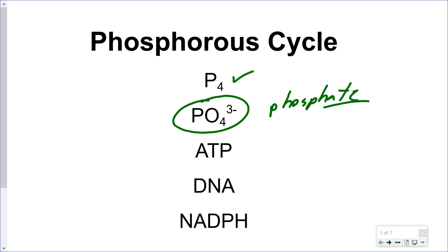When phosphate is taken up and used by biological organisms, it is used for various different things. It is used for making the universal energy currency, ATP, or adenosine triphosphate. It is used for making genetic information, DNA (deoxyribonucleic acid). The backbone of DNA has alternating sugars and phosphates, and that also happens to be the case with RNA (ribonucleic acid). And in plants, NADPH — nicotinamide adenine dinucleotide phosphate — is also a high energy molecule found there.